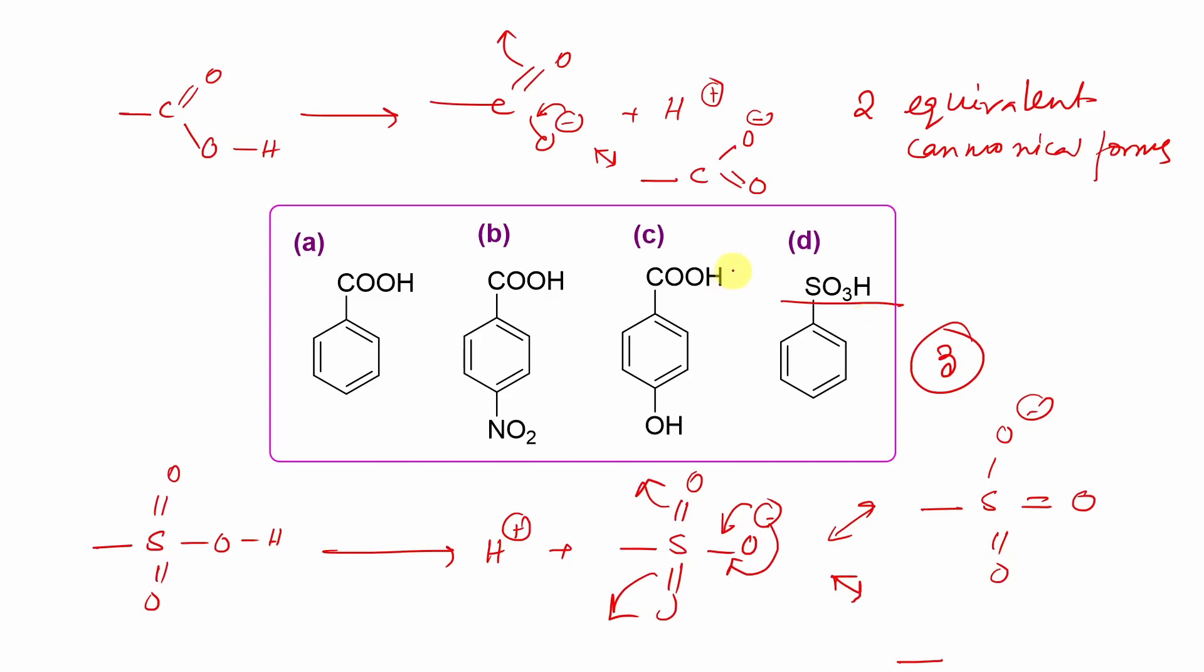In this case, carboxylic acid is less acidic or weaker compared to sulfonic acid. Now you can ask me one question: sir, there is nitro, an electron withdrawing group. Can't it increase the acidity of carboxylic acid, but can it cross sulfonic acid? No, student. Why?